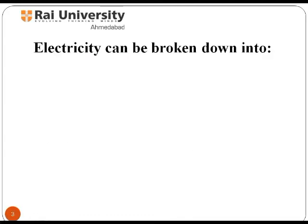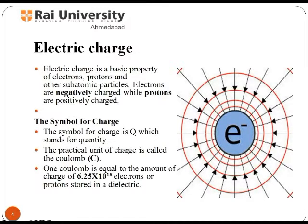Electricity can be broken down into electric charge, voltage, current, and resistance. Electric charge is the physical property of matter that causes it to experience a force when placed in an electromagnetic field. The symbol of charge is denoted by the letter Q, which stands for quantity. The practical unit of charge is called the coulomb, denoted by the capital letter C. One coulomb is equal to the amount of charge of 6.25 × 10^18 electrons or protons stored in a dielectric.